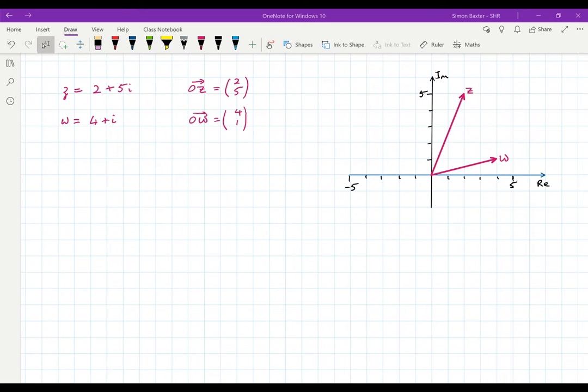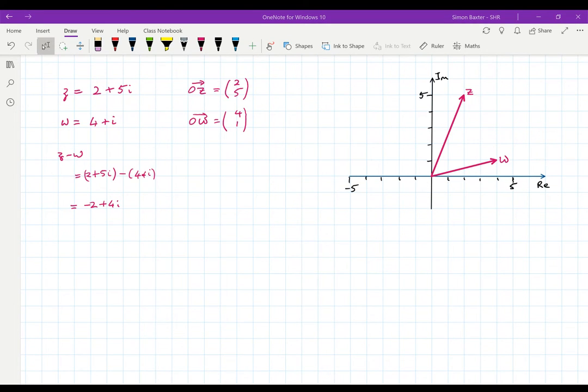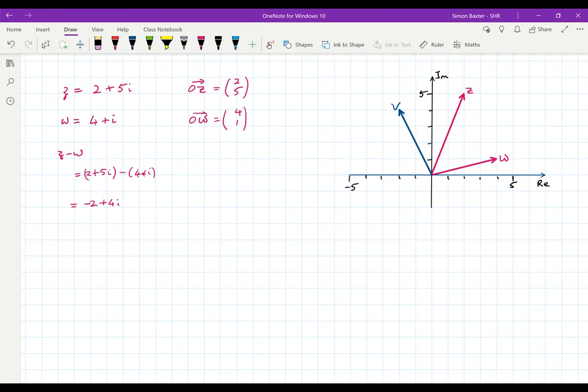Let's look now and see what happens if we look at the vector or the complex number Z minus W. Z minus W is going to be equal to 2 plus 5i minus 4 plus i. 2 minus 4 is minus 2, 5 minus 1 is 4i. So my complex number is minus 2 plus 4i.